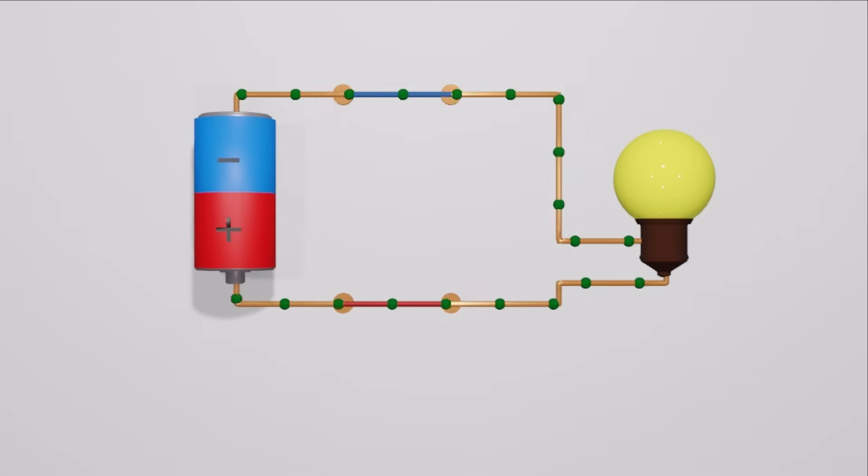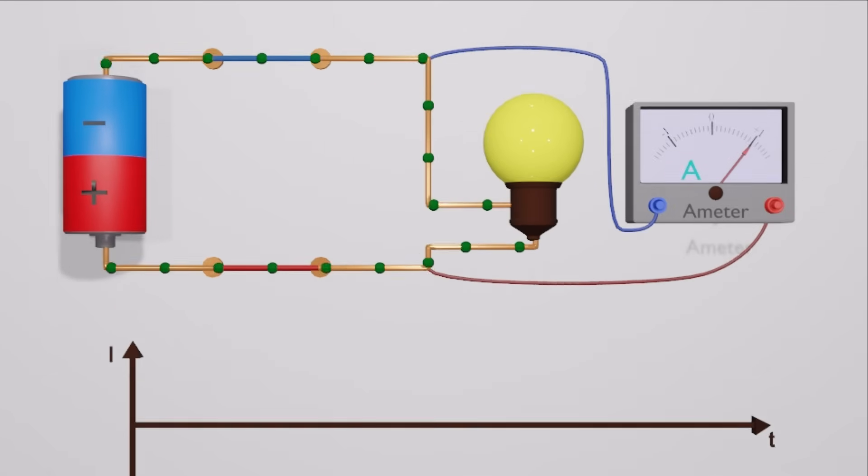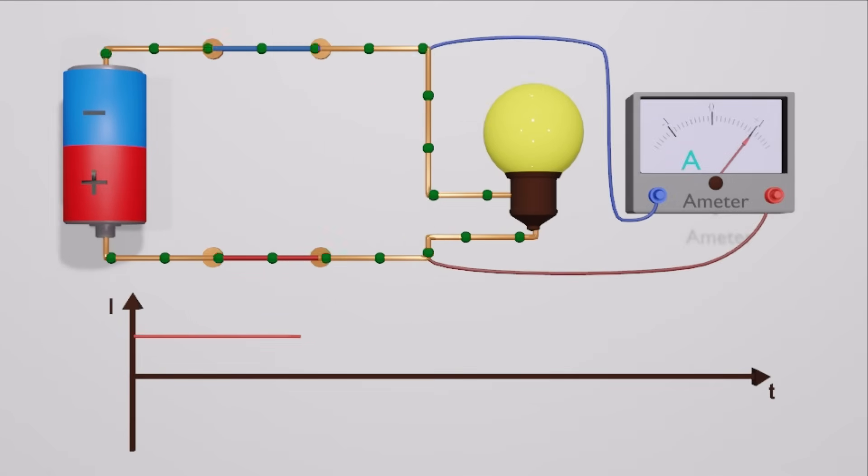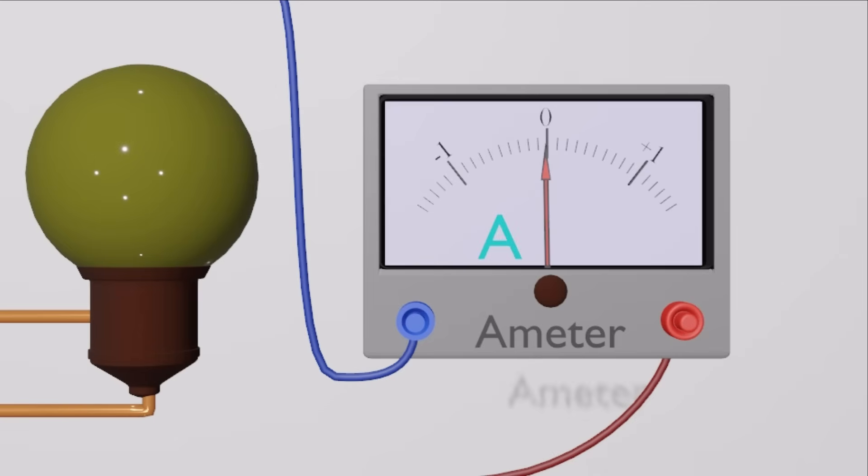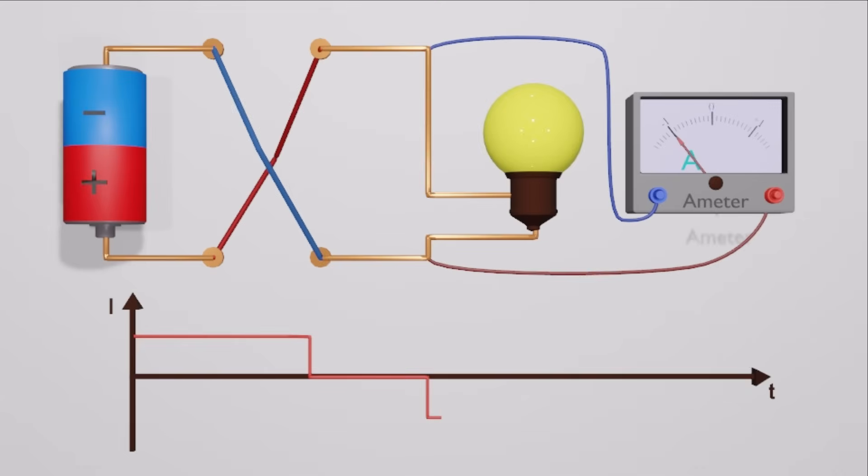If all the current you produce flows out in one direction, what about disconnecting the wires? The current becomes zero. Then let's flip it back. Now we have current that flows in the opposite direction.